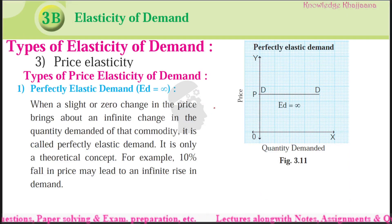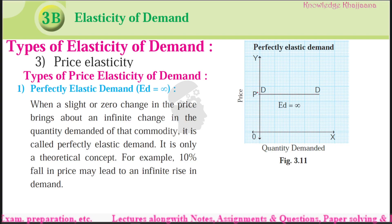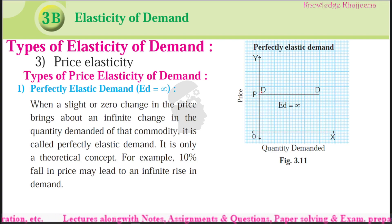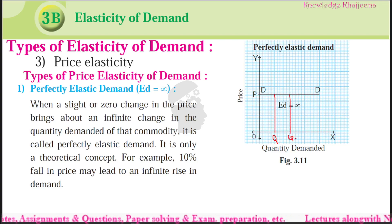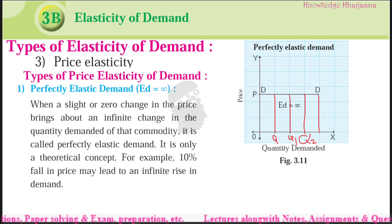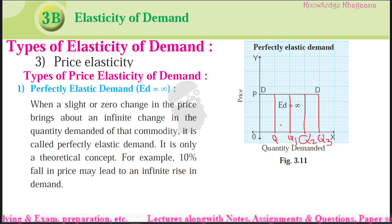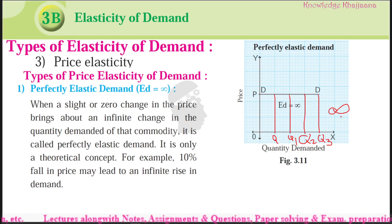If we look at this graph — price OP is shown on the y-axis and quantity demanded is shown on the x-axis. The price is remaining the same. The quantity demanded is changing — if the quantity demanded was OQ, even though the price remains the same, it increases and becomes OQ1, then OQ2, then OQ3. So the price is remaining same from OP, but the quantity demanded is changing from OQ to OQ1, OQ2, OQ3. This is infinite change in demand while price remains same.